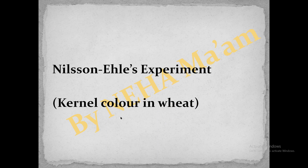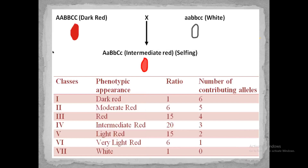The first and major example of quantitative inheritance was shown by Nielsen Ehle's experiment, which was performed to determine kernel color in wheat and its gradation. This experiment involved a cross between two parents — one parent having dark red grain color and the other having white grain color. When crossed, the F1 progeny showed intermediate red coloration. After selfing, the F2 progeny was categorized into seven distinct classes with a ratio of 1:6:15:20:15:6:1.